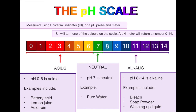First of all we have the pH scale. The pH of a substance is measured using universal indicator or a pH probe and meter. The universal indicator will turn one of the colours on the scale, as you can see in the middle of the screen, and a pH meter will return a number from 0 to 14. Anything on the left of the number 7, the neutral colour, is an acid, and anything between 8 and 14 is classed as an alkali.